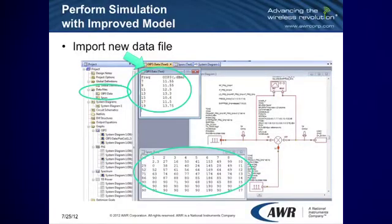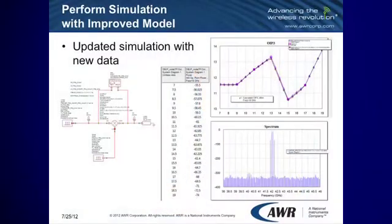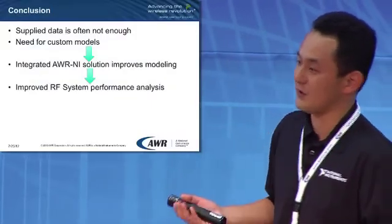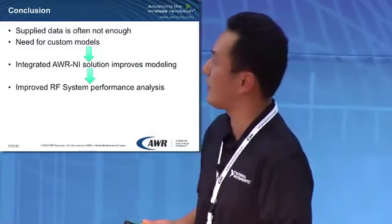In the Visual System Simulator, you would have the particular data file in the project tree. That data would include OIP3 measurements and the spur table that you went through in the LabVIEW sequence. These are automatically read in, and the task is to go back and reevaluate the system — look at how your RF subsystem is performing with your new measured data. You can look at the results in terms of plots, spurs, and also in a table format, and export to a data file.